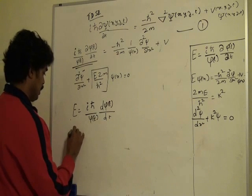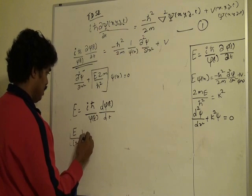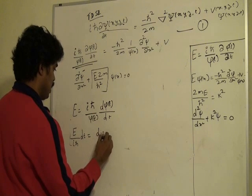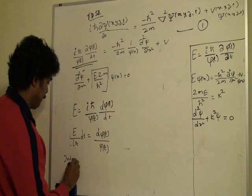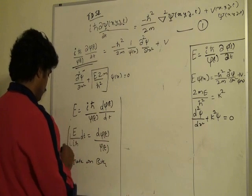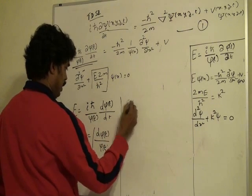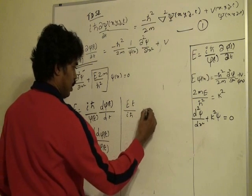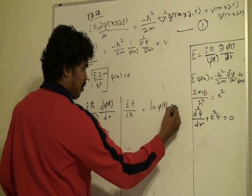So what we can do here is E by ih bar dt is equal to, basically I am doing this, dφ(t) by φ(t). So if we integrate on both sides, you will get Et over ih bar is equal to logarithm of φ(t). Again constant,